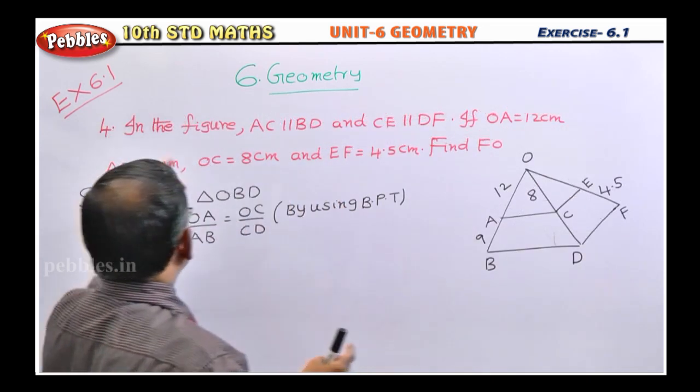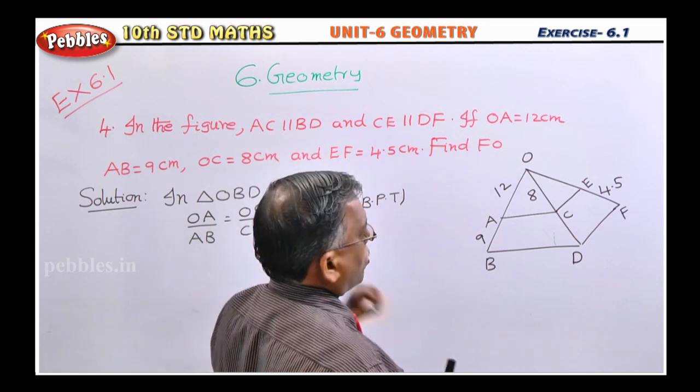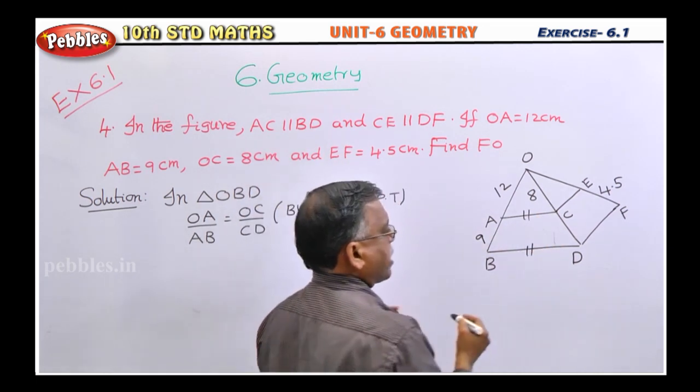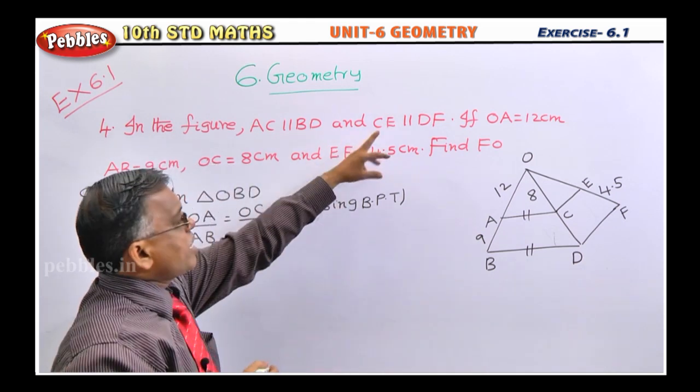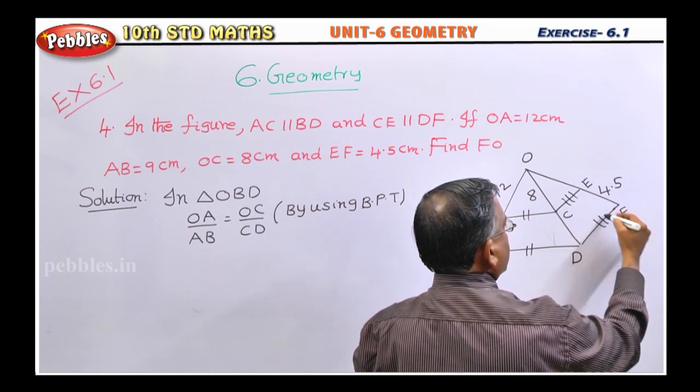Students, listen. In the figure, AC is parallel to BD, that means this AC is parallel to this side BD. And CE parallel to DF, that means this CE is parallel to this side DF.